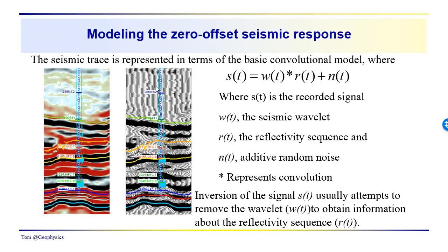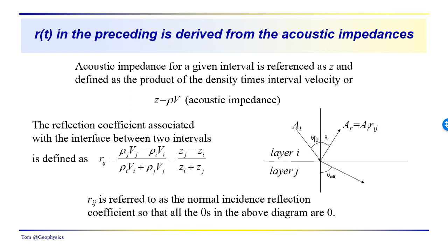When looking at this data we're thinking of it as normal incidence or coincident source and receiver at the same location. The reflection events we see are ones that come back from normal incidence on a subsurface interface. So the angle theta_I equals theta_R equals zero. The refraction angle would not equal zero. The amplitude ratio A_R over A_I equals the reflection coefficient — the amplitude of the reflected seismic event equals the amplitude of the incident event times the reflection coefficient between the two layers.